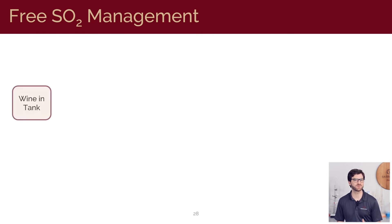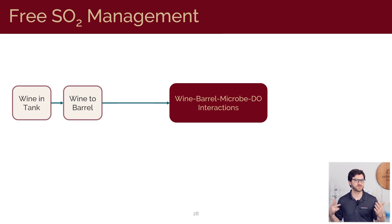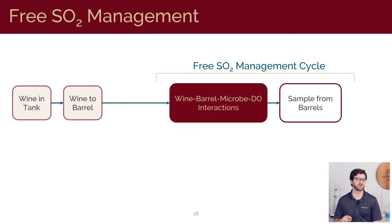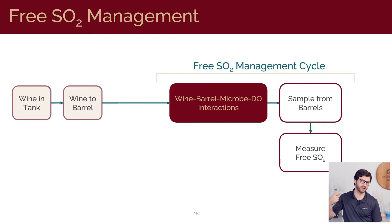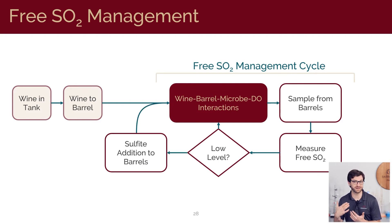We start with homogeneous wine in tank, and it's broken down into many small, high surface area, handcrafted vessels. The wine experiences many complex interactions between the barrel, microbes, DO, and the environment, all of which are also going to be interacting with the free SO2 levels in the barrel. The winemaking team has several opportunities to intervene and manage this process. This cycle consists of a feedback loop where wine samples are drawn from barrel, analyzed for free SO2, and the winemaker makes a decision if levels are acceptable or if an addition is required.